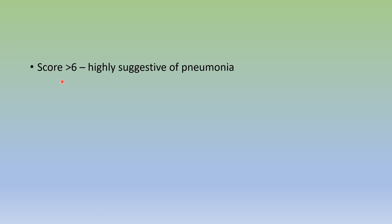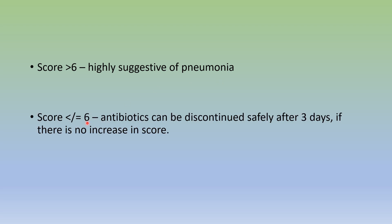How is the CPIS score interpreted? If the score is more than 6, it is highly suggestive of pneumonia. If it is less than or equal to 6, antibiotics can be discontinued after 3 days, if there is no further increase in the score.